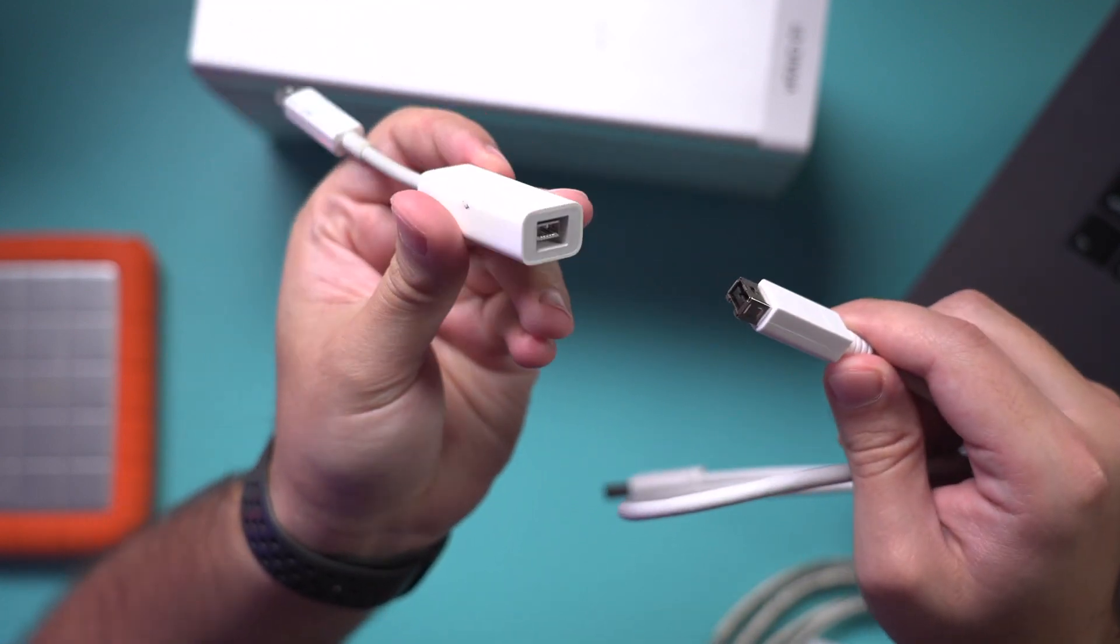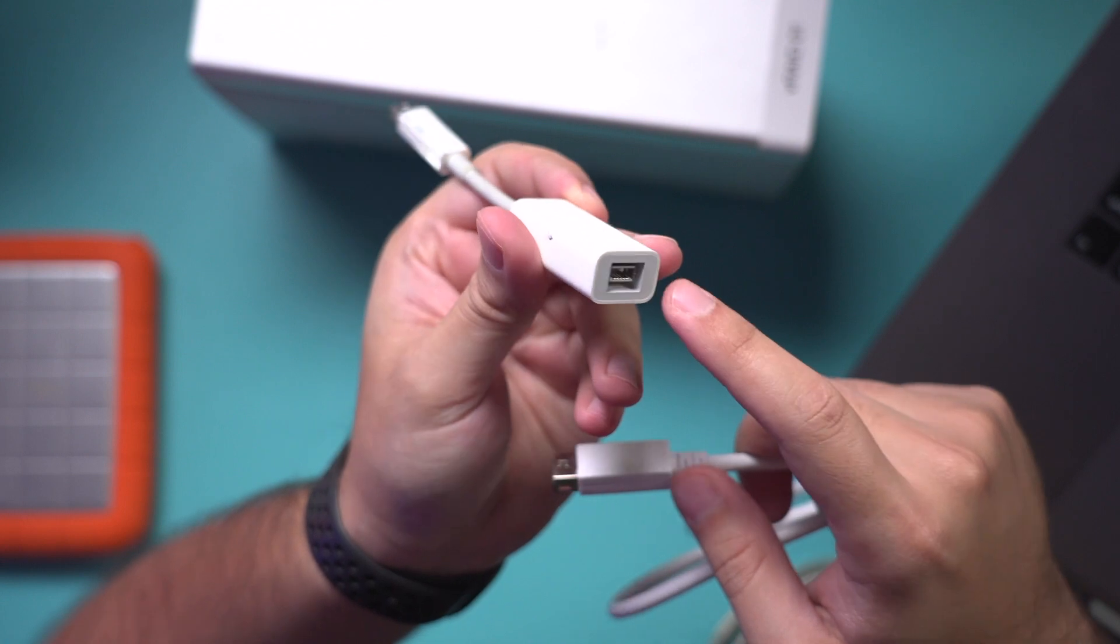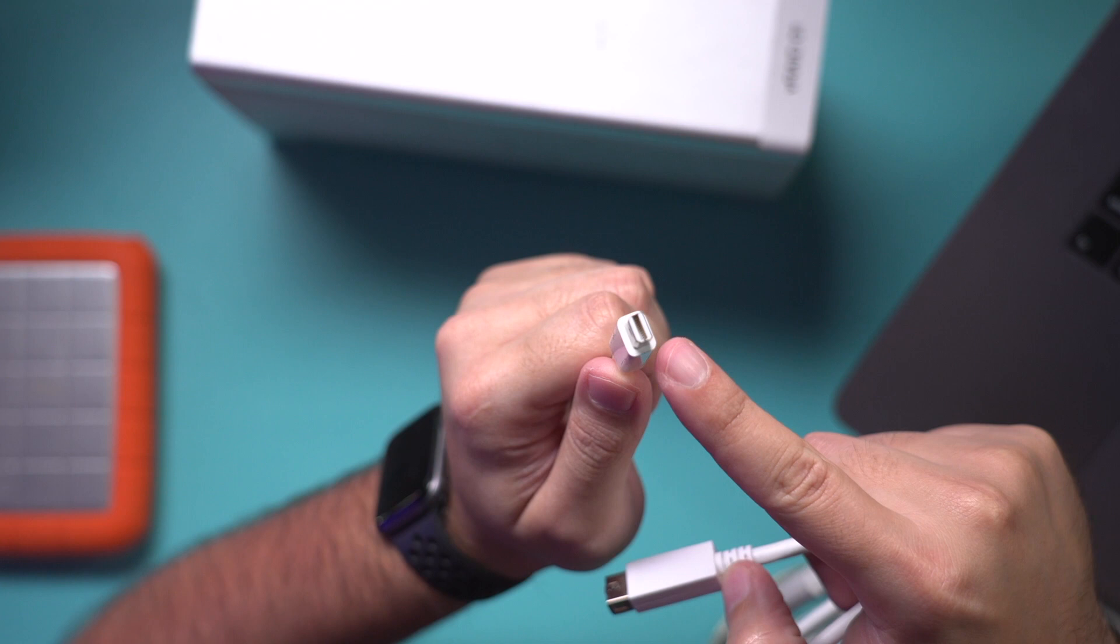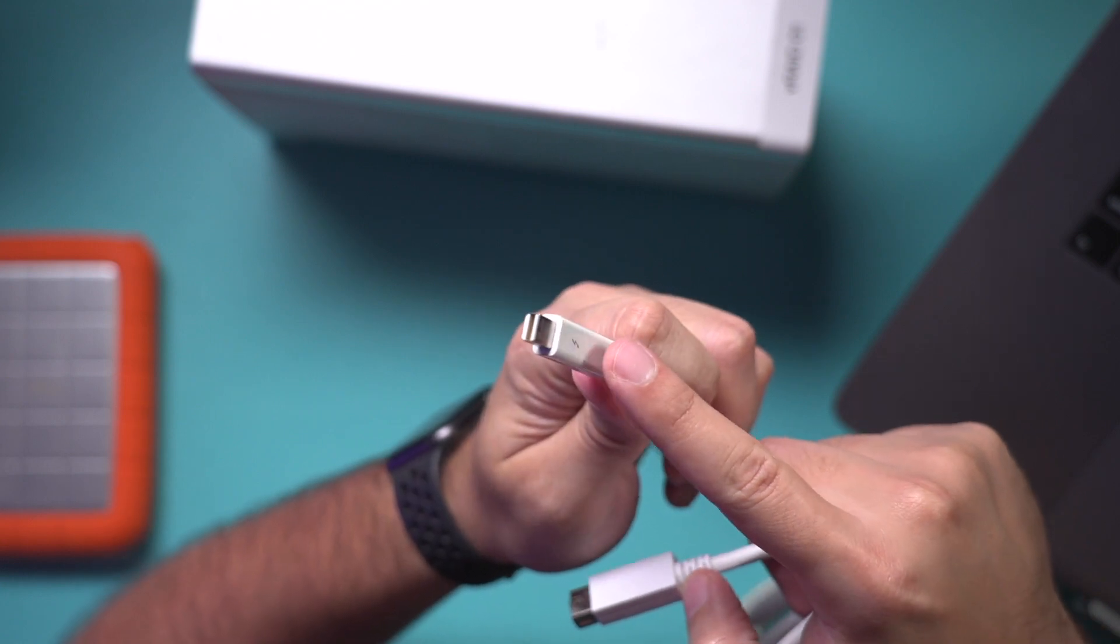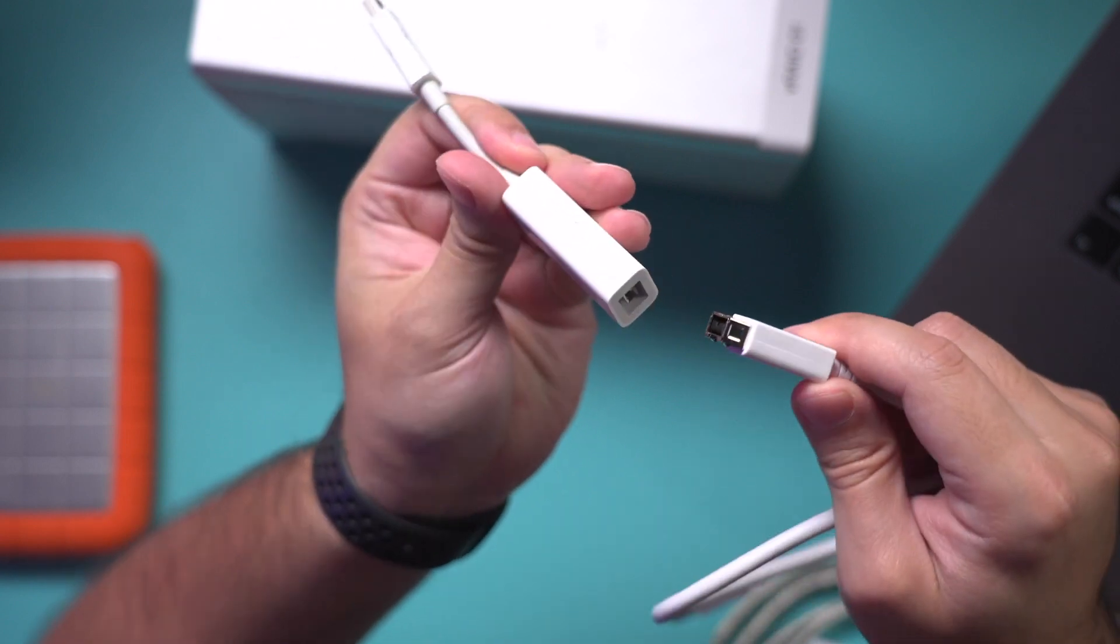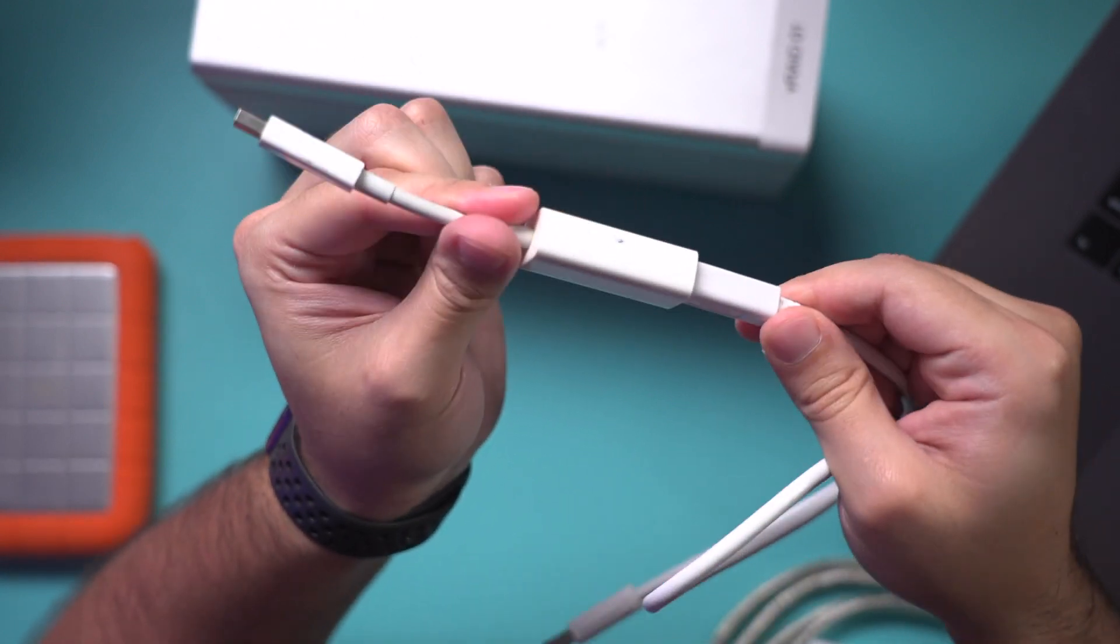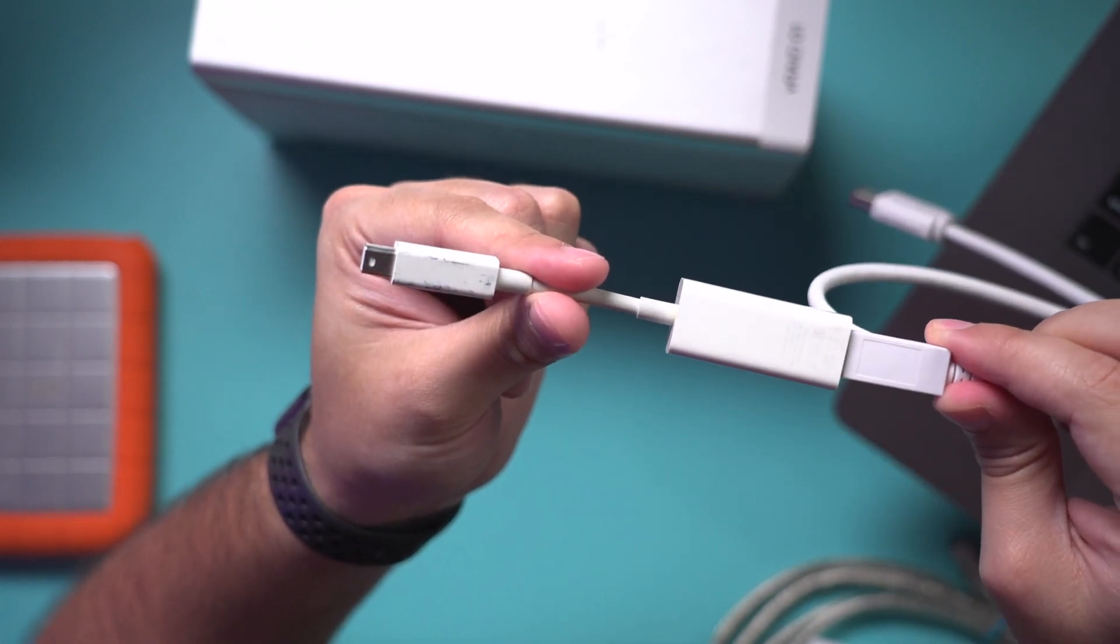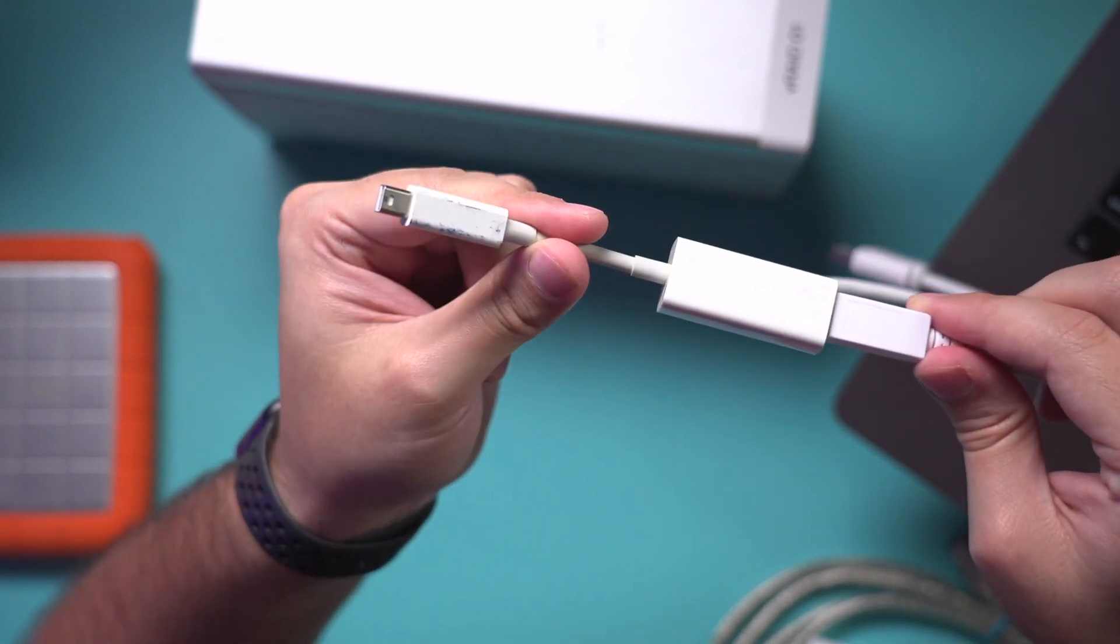You need this dongle right here. This is FireWire 800 on one end and then it goes to Thunderbolt 2. Thunderbolt 2 is still not the end result, so we still need one more piece, but these two should connect like this. You need the cable itself, then you need this first dongle that goes to Thunderbolt 2.